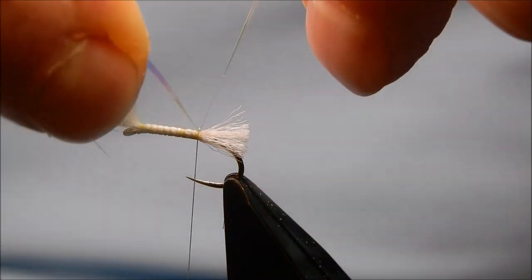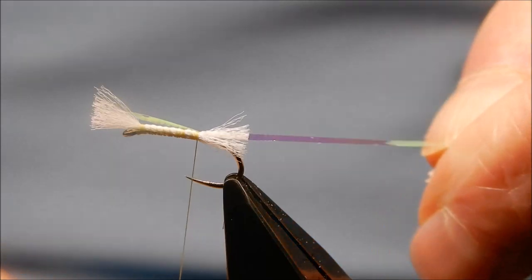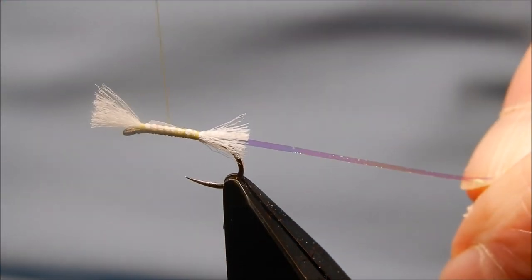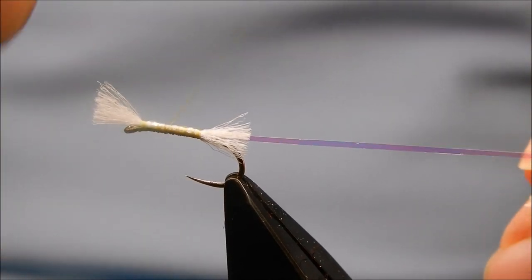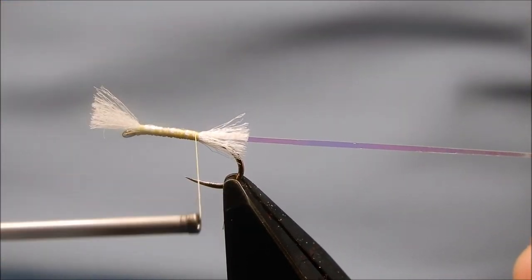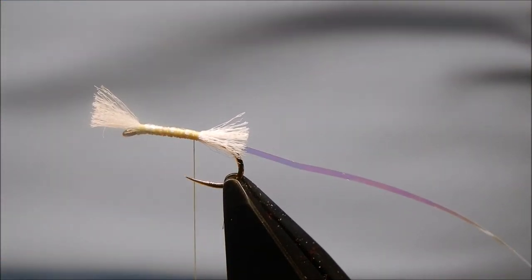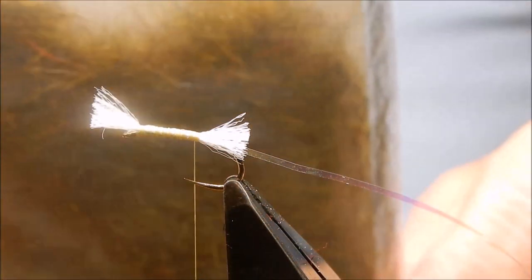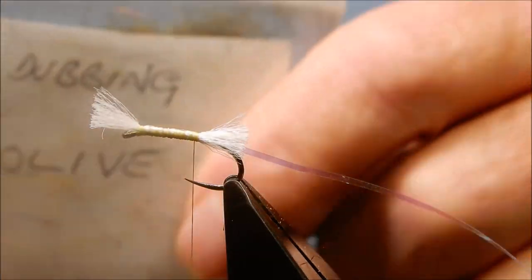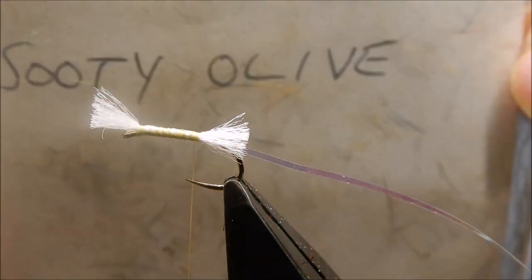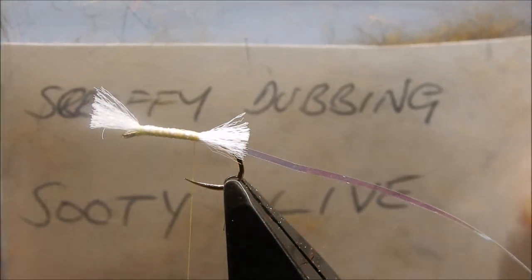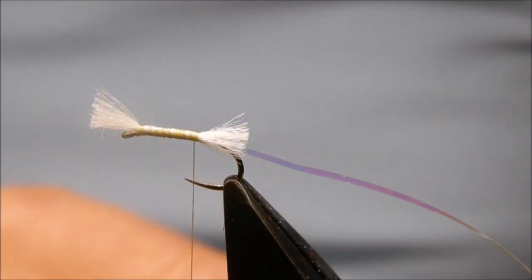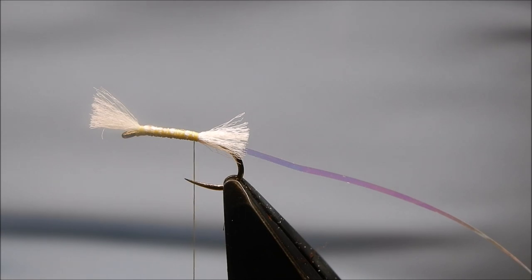Tying the rib, which is medium pearlescent tinsel. Just tidy it up. And then the dubbing colour of your choice. They're easy to tie. This is olive. This is Andrew Ellis's dubbing. I use it most of the time. Recommended.